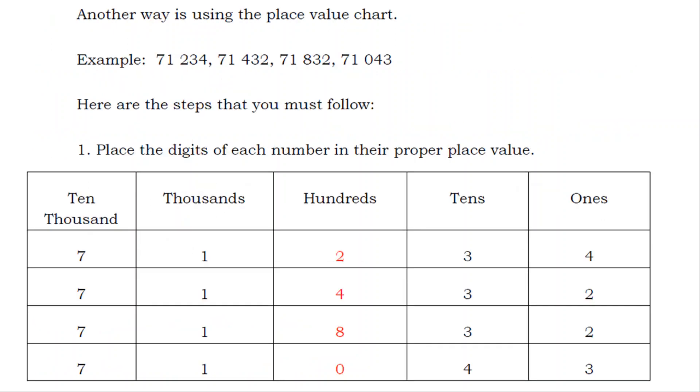Another way is using the place value chart. Example, 71,234, 71,432, 71,832, 71,043.